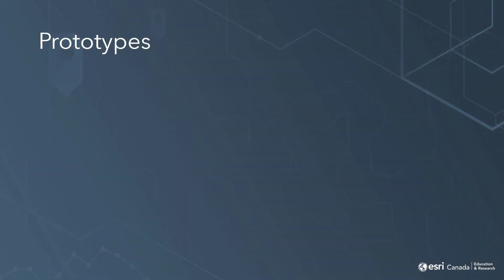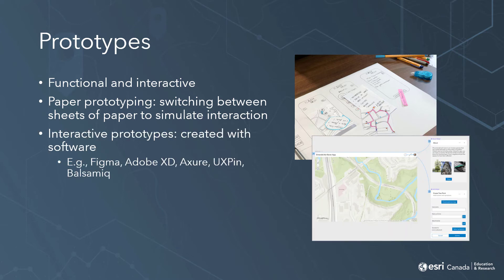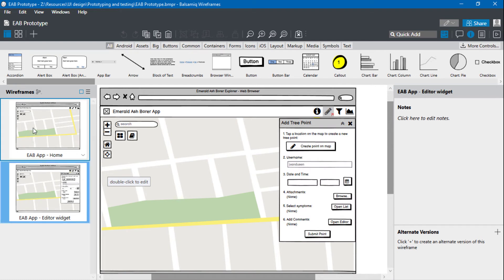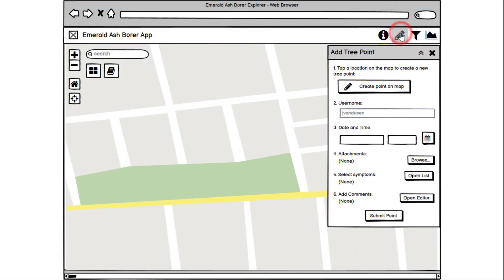Once we've created sketches, wireframes, or mockups, we can assemble these into prototypes. With prototypes, users can actually try out the design and get a feel for how the final product will work. You can do this just with paper sketches or wireframes by switching between them by hand as someone pretends to click on them, or you can build interactive prototypes with a wide variety of prototyping software available online. If you're using Balsamiq, you can turn your wireframes into prototypes by creating links between them — for example, linking a wireframe that shows a widget closed to one that shows it open.